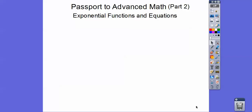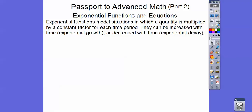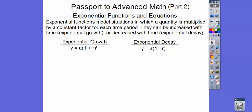This is part two of our Passport to Advanced Math for SAT prep. This section covers Exponential Functions and Equations. Exponential functions model situations in which a quantity is multiplied by a constant factor for each time period — they can increase or decrease with time. Exponential growth is y equals a times (1 plus r) to the t, and decay is the same except it's (1 minus r) to the t.